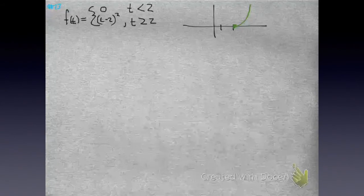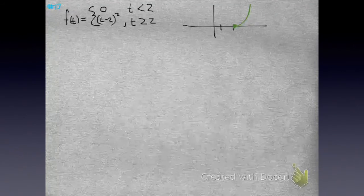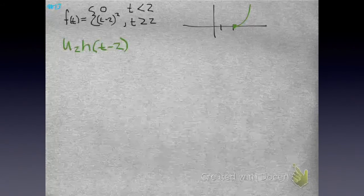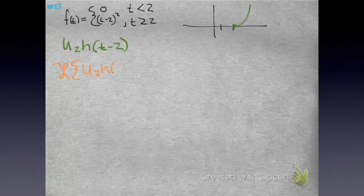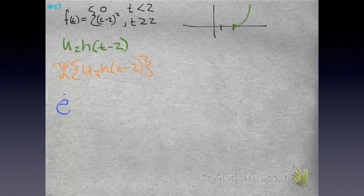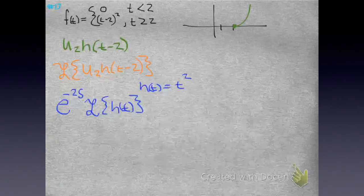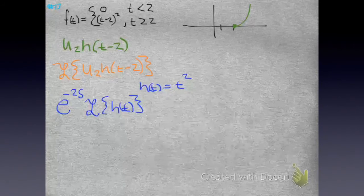It'd be nice to be able to write it in our unit function notation — some function h(t) notation. If we were looking for the Laplace of that, then we have this form. This is going to be e to the minus 2s, because that's a 2.